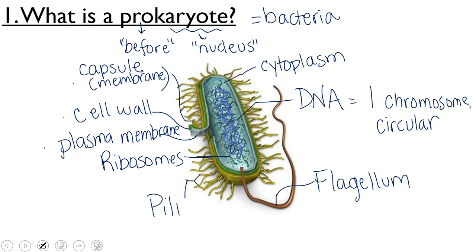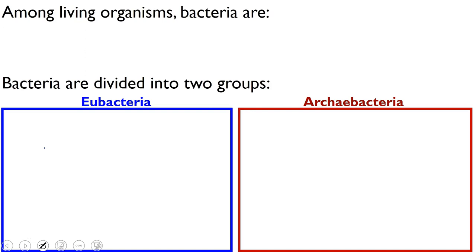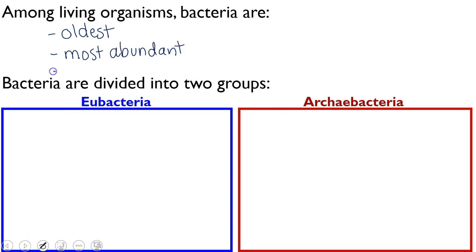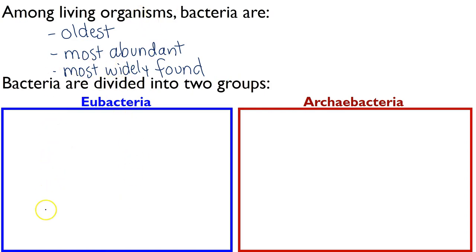So now that we know what they look like, let's start to talk about how we can classify them. Among living organisms, bacteria are the oldest, the most abundant, and the most widely found. They are probably also among the most diverse; it's just that our identification techniques haven't quite caught up with them yet. Within these old, abundant, widely found organisms, we've got two main groups, and these two groups are actually divided at the level of domains.